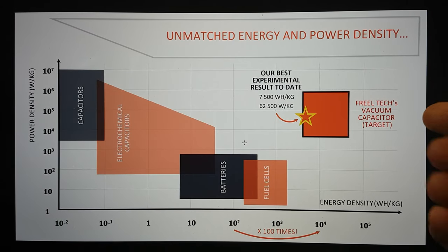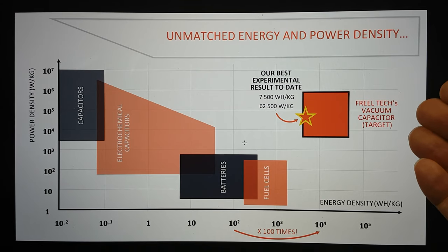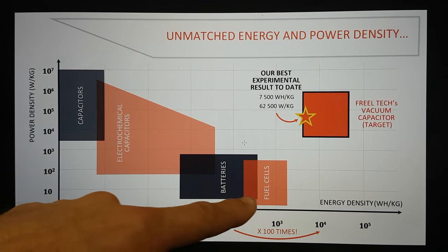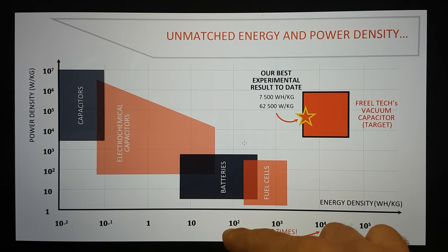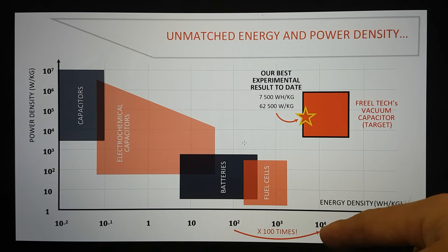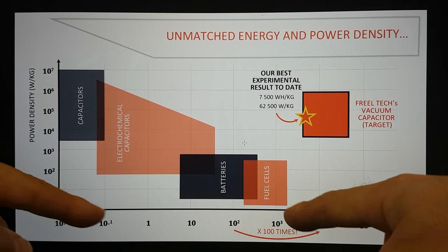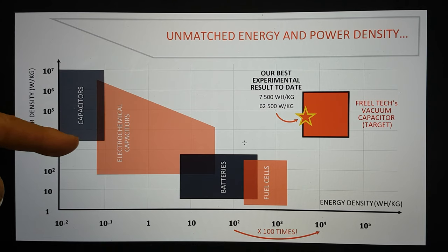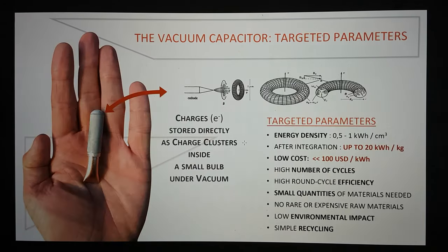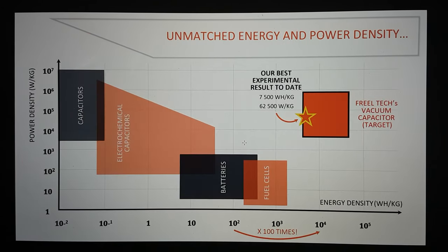What they're saying here is they have unmatched energy and power density. They've got the capacitors, electrochemical capacitors, batteries, and fuel cells all over here. But here, from batteries, they've got two orders of magnitude higher in terms of energy density and a much higher power density, watts per kilogram, than batteries and fuel cells, almost onto electrochemical capacitors and capacitors, certainly within the range of the power densities of those. This is very impressive if it can deliver and truly give these high round cycle efficiency and high number of cycles figures.